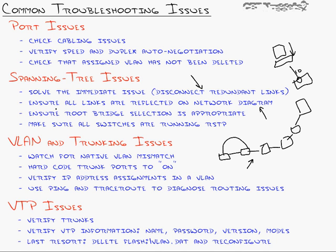Make sure all links are reflected on the network diagram. Employees under a desk will daisy-chain a switch for a colleague without knowing the ramifications — that's where port security is important. Ensure root bridge selection is appropriate: find the core switch of your network and elect that as the root bridge. Make sure all switches are running Rapid Spanning Tree Protocol if possible — if you have a fairly modern network, Rapid Spanning Tree will recover much faster.